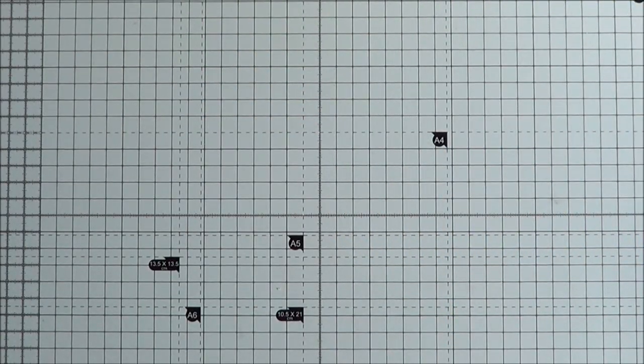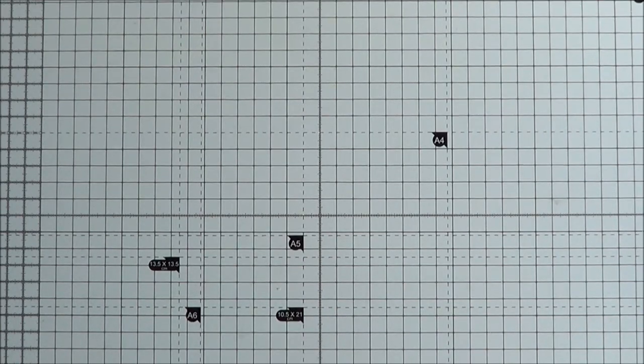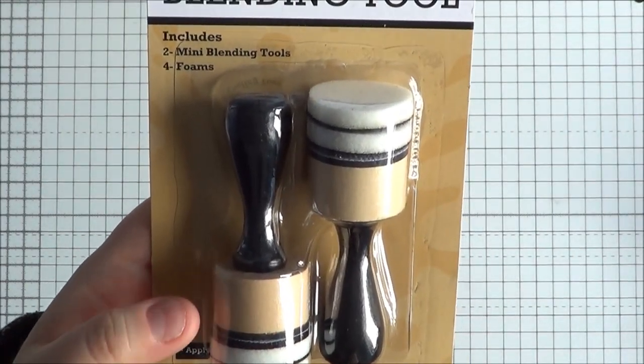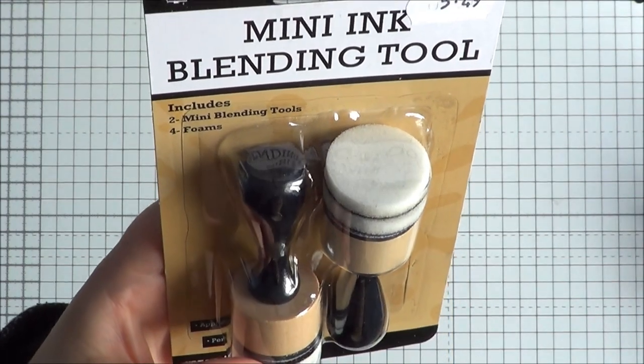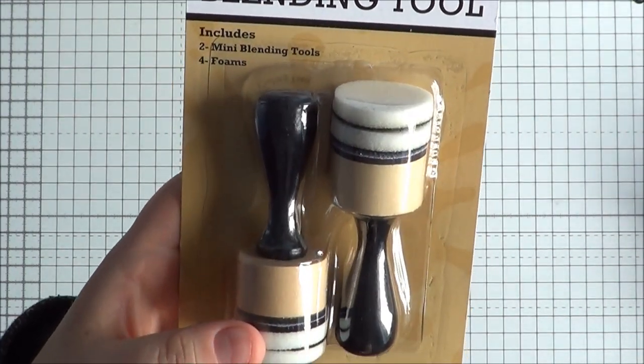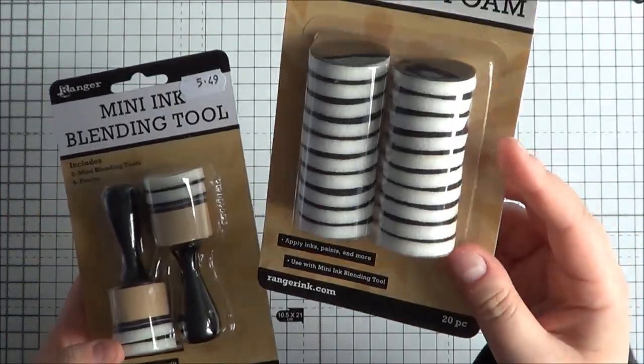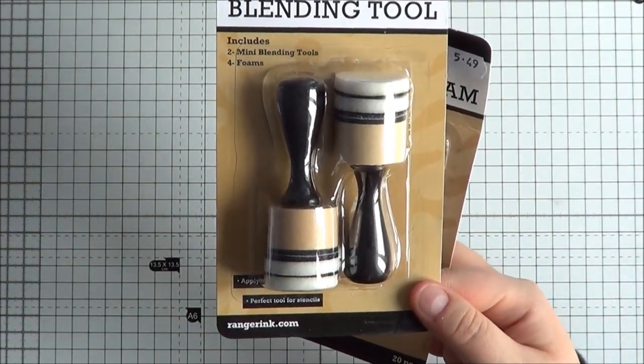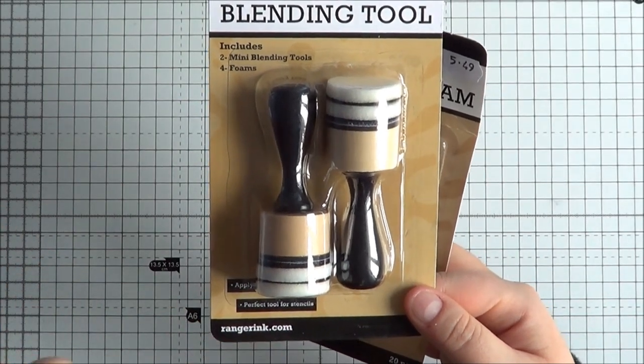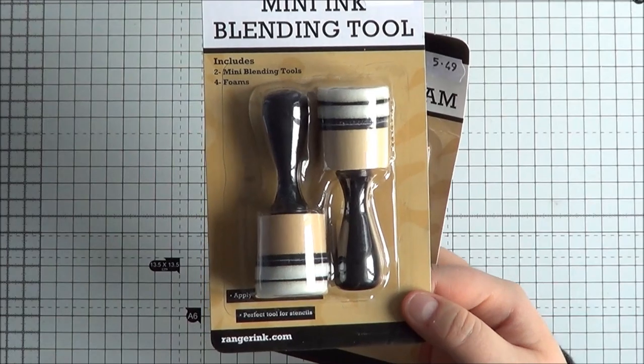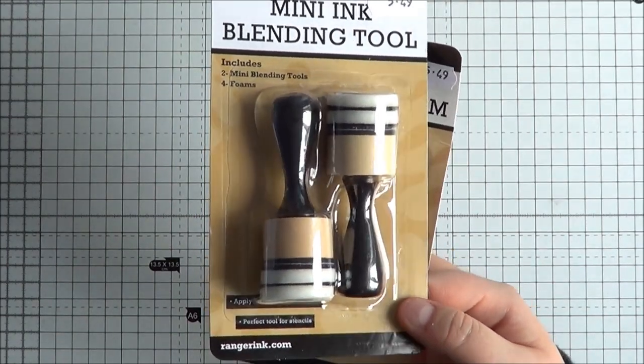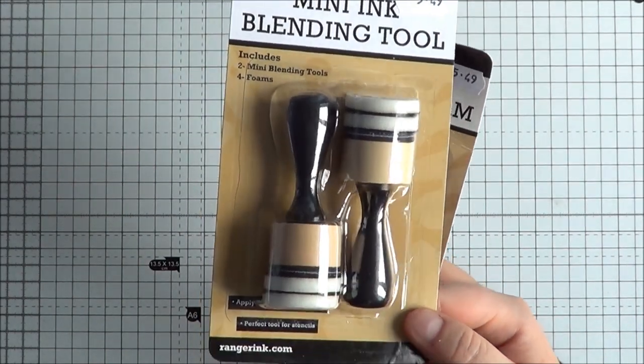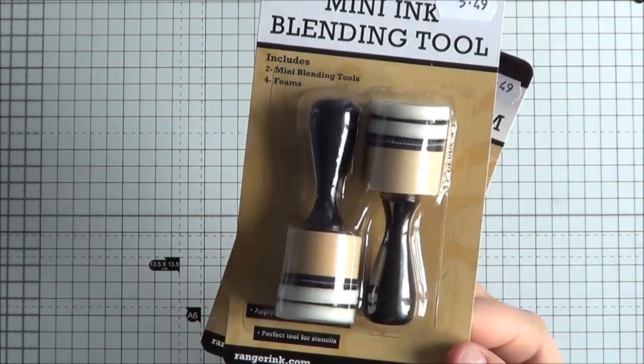And then next I ordered from Craft Obsessions. I ordered the new Tim Holtz Mini Blending Tool. Although I think it's technically Ranger but, you know, it's Tim Holtz really. So I got the mini one and then I got some extra foams as well. I'm hoping that I will prefer this one better than the rectangular one. Occasionally I used to get kind of like lines from where the rectangle foam was. I know that has been a problem for quite a few different people. And Jennifer McGuire recently did a review just a couple of days ago actually. And she said it's good so I'm glad. Because I'd already bought them so, yeah, really happy with those.